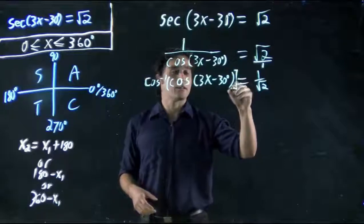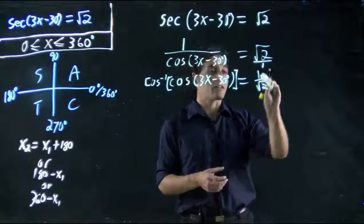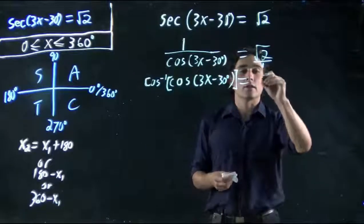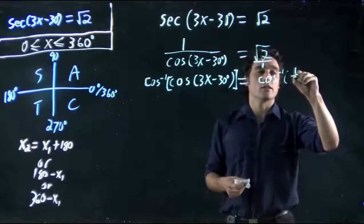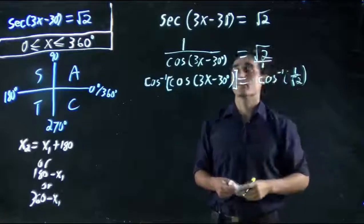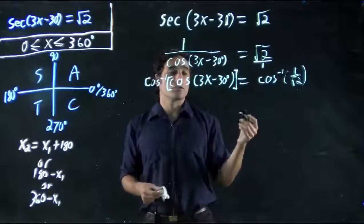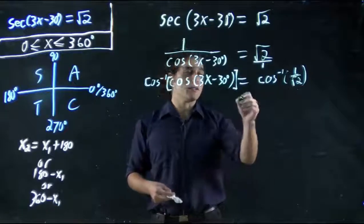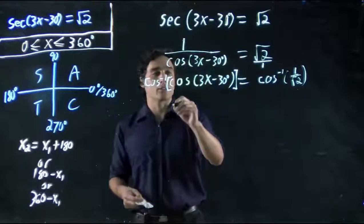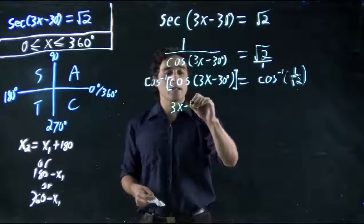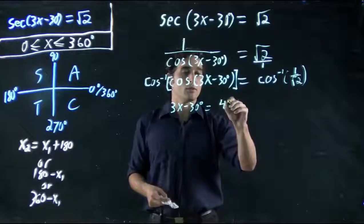I'll use a square bracket to differentiate and make it easier to tell the difference. Cos to the minus 1 of 1 over square root 2. Well, cos to the minus 1 of 1 over square root 2 should actually give me 45. Remember, this cancels, so we get 3x minus 30 degrees, and that should be equal to 45 degrees.